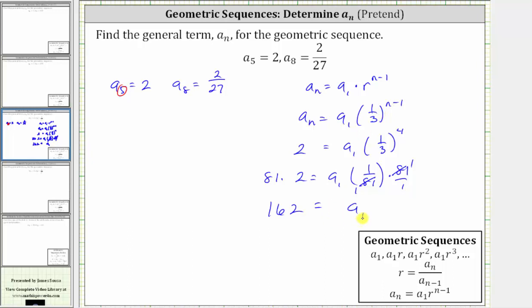Now that we've found r and a_1, we know the formula for a_n. a_n is equal to a_1, which is 162, times r raised to the power of n minus 1, which is 1/3 raised to the power of n minus 1. Before we go, let's just verify this formula does give us a_5 and a_8 correctly.